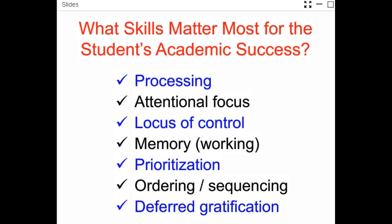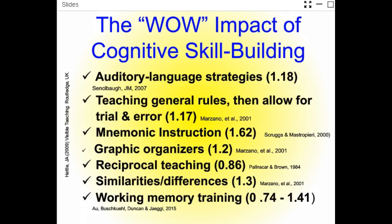The effect sizes of these cognitive skills are impressive. Relationship skills have a high effect size of a year and a half. Building auditory language strategies — like the way Fast Forward does — the effect size is over two years' worth of gains. Teaching problem solving, memory, graphic organizers, similarity of differences, and working memory training — these are crazy high effect sizes. That's why you want to be building cognitive skills with your students.